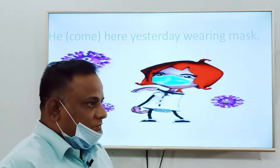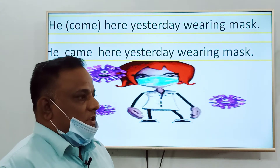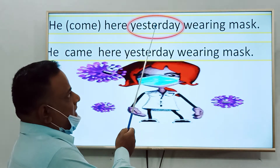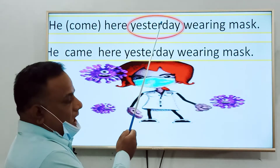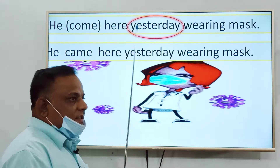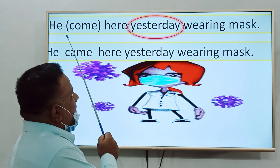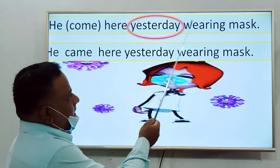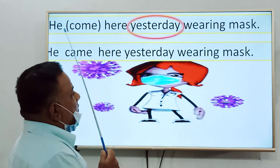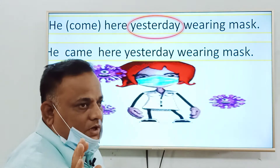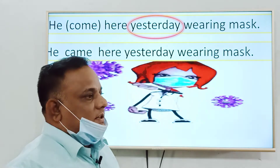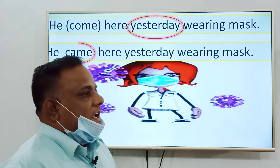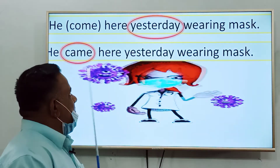Let's see an example. Here in this sentence, we are watching a time indicator — the word 'yesterday' is helping us identify that the sentence is in past form. And we are observing that the sentence is in affirmative form; there is no negative sign here. So we must use V2 form, that means the past form of verbs in the sentence. The right answer will be: he came here — that means 'he came here yesterday wearing a mask.'